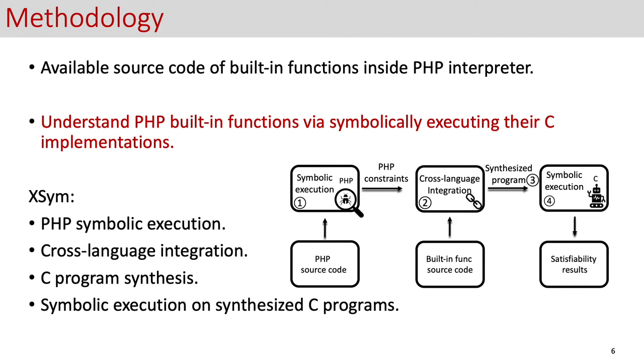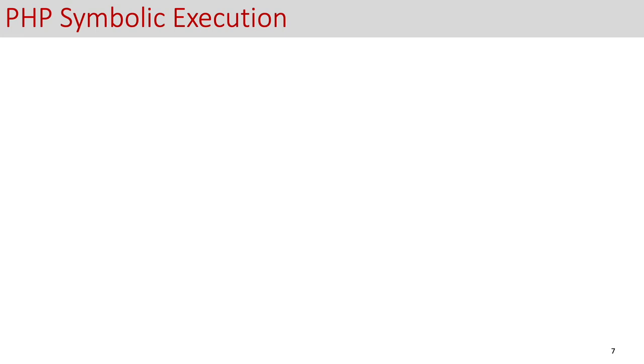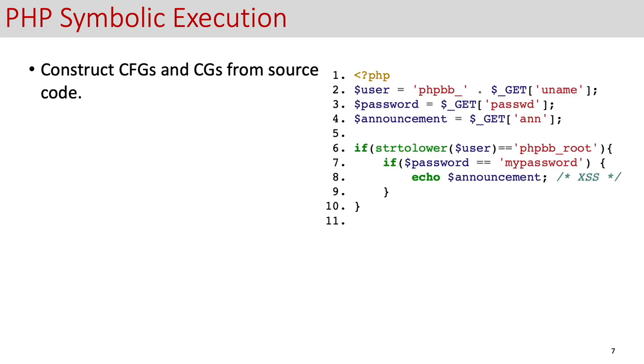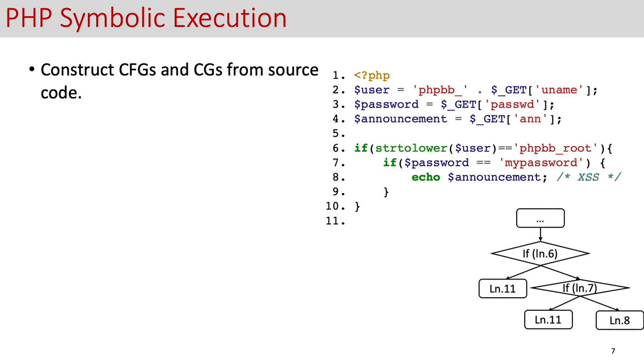Next, we go to each component of XSym in detail. The PHP symbolic execution part is done at the source code level. In particular, we build control flow graphs and call graphs above the ASTs. For example, given the code on the right, we can construct the control flow graph as follows. Then, we symbolically work through the control flow graphs and call graphs to collect the necessary constraints.